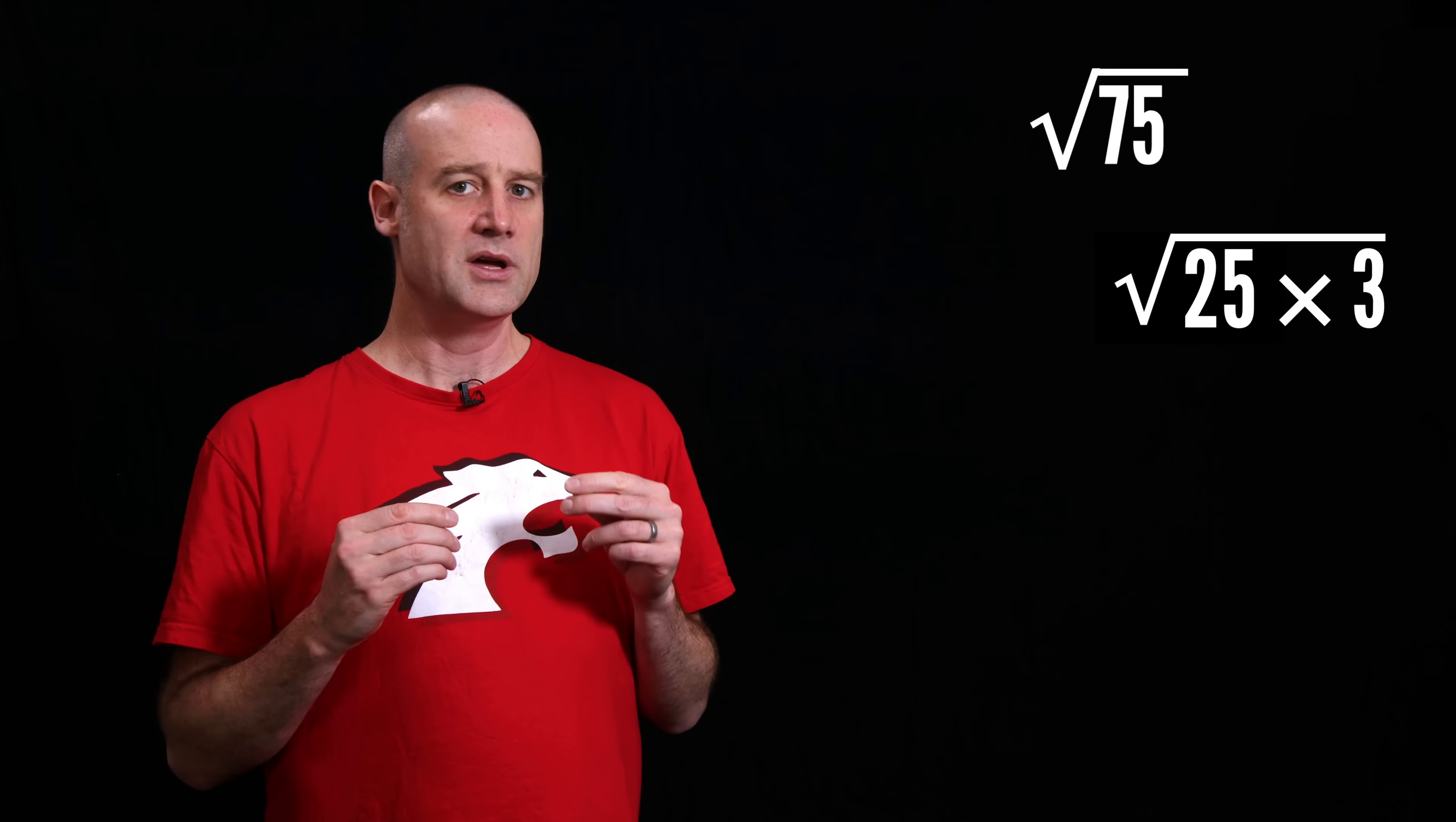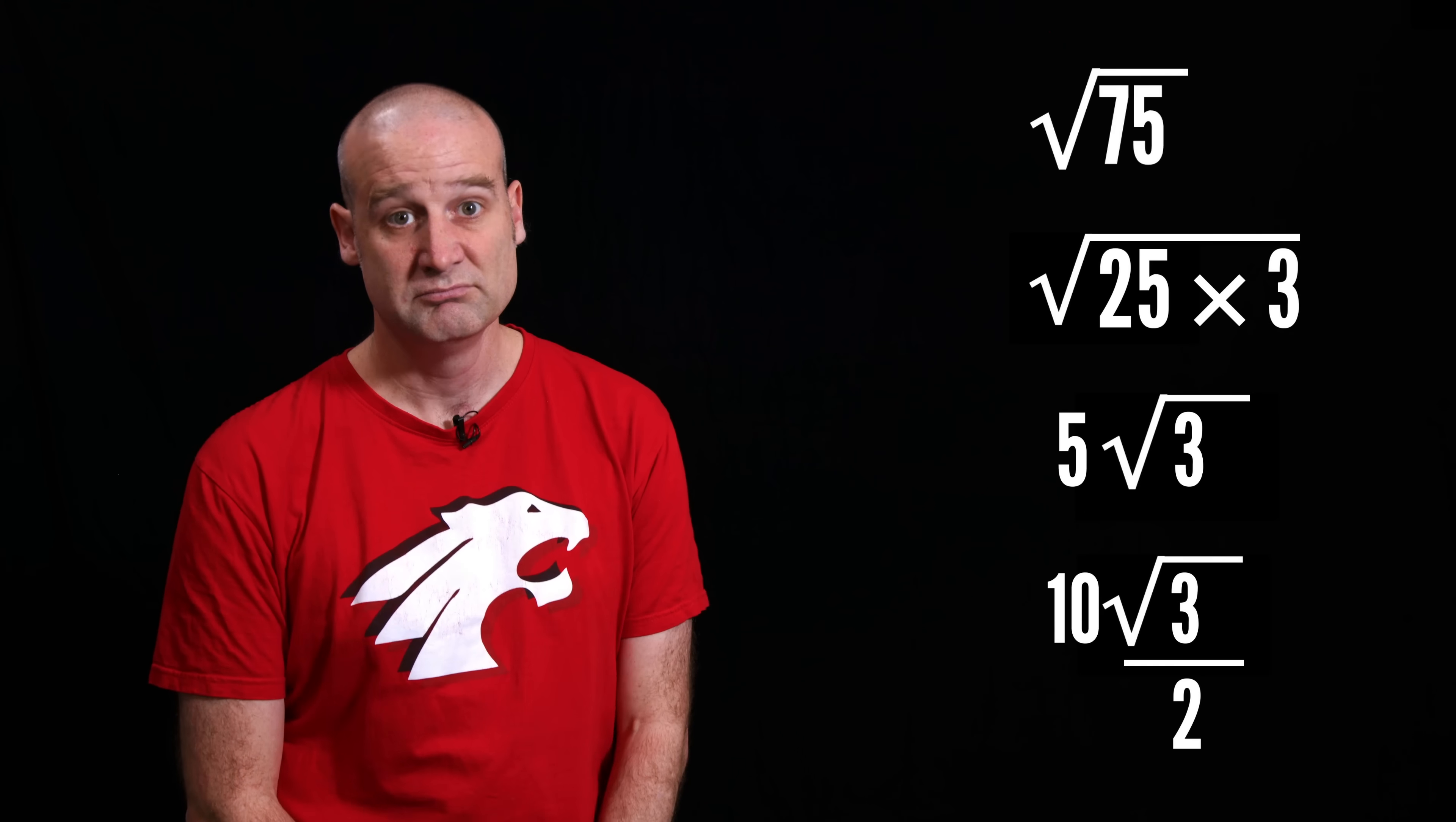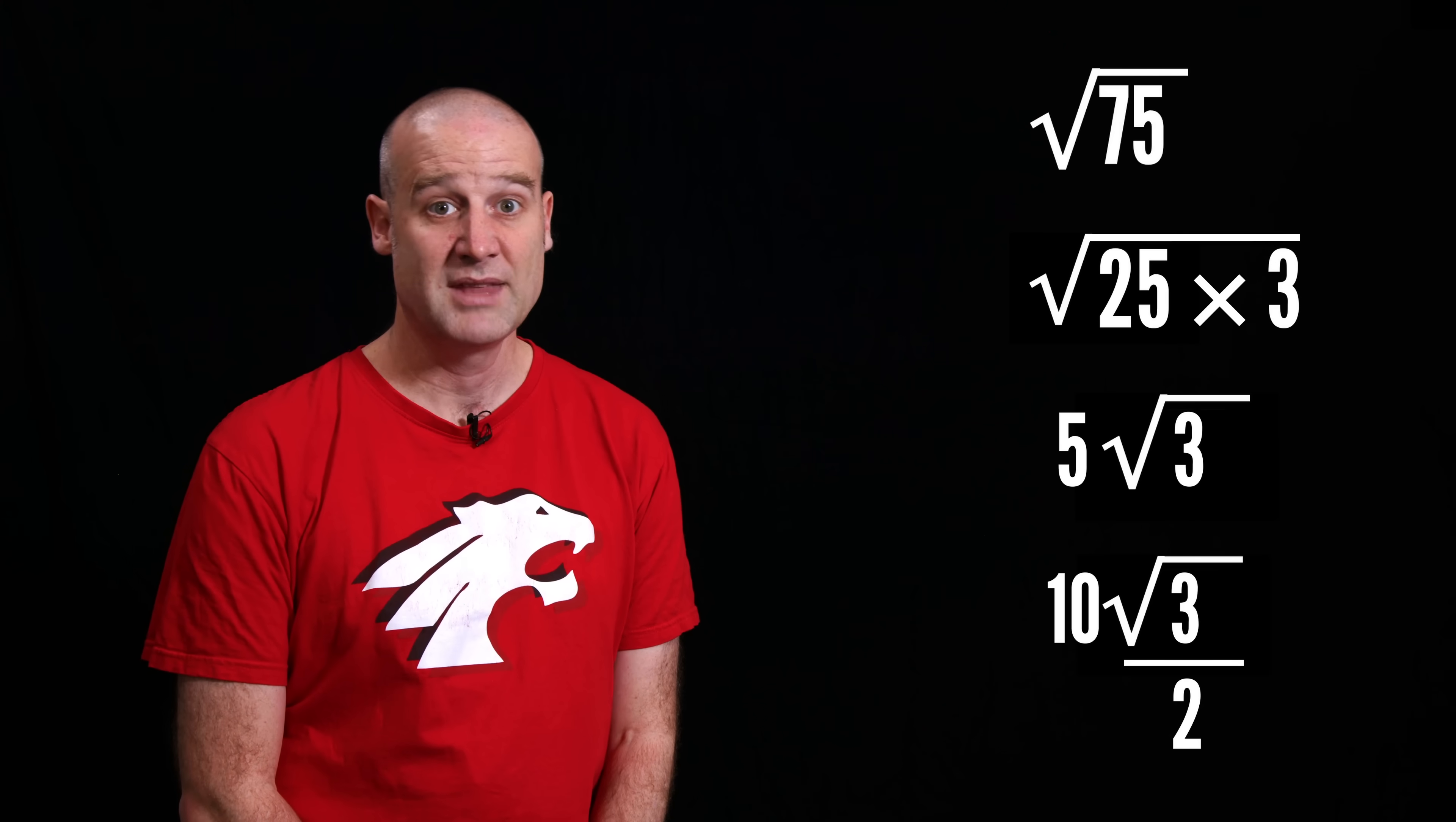And finally, the square root of 75. What's going on there? Well, that's just a bit of algebraic manipulation. What is the square root of 75, if not the square root of 25 times 3? 25 comes out, that's the 5 at the front, which is half a 10. Piece of cake. That wasn't that hard.